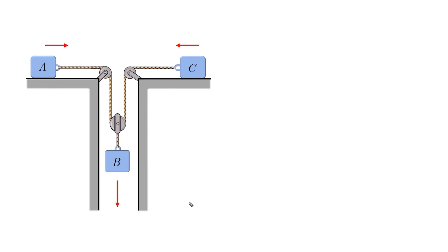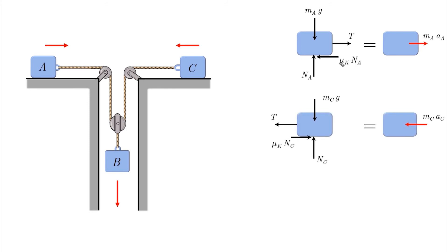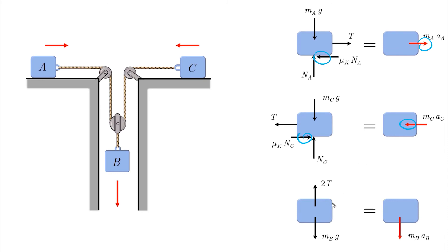Now for the equations of motion. For block A, ΣF = ma gives: T minus kinetic friction (μk × Na) equals MA × AA, with the direction of AA as assumed. For block C, similarly: T minus kinetic friction equals MC × AC. Note that in both cases, kinetic friction always acts against the direction of motion. For block B, with positive downward: mB·g minus 2T equals MB × AB.